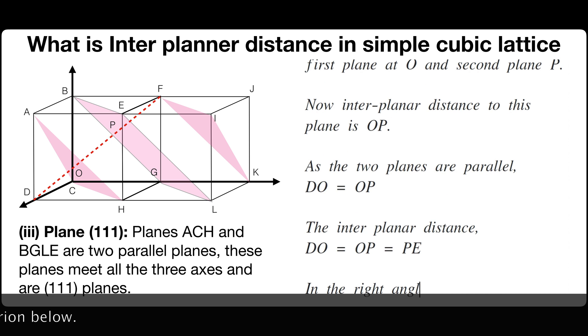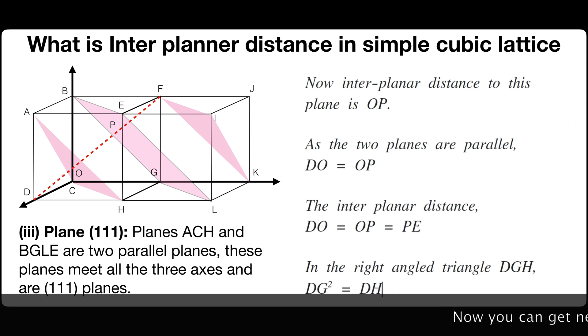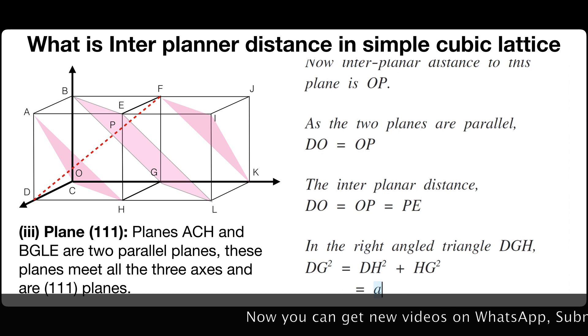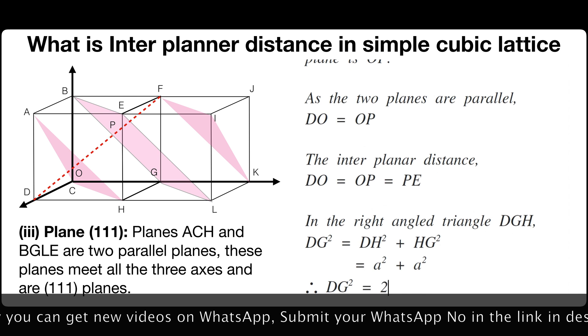In the right angle triangle DGH, DG square is equals to DH square plus HG square which is equals to A square plus A square. Therefore, DG square is equals to 2A square.